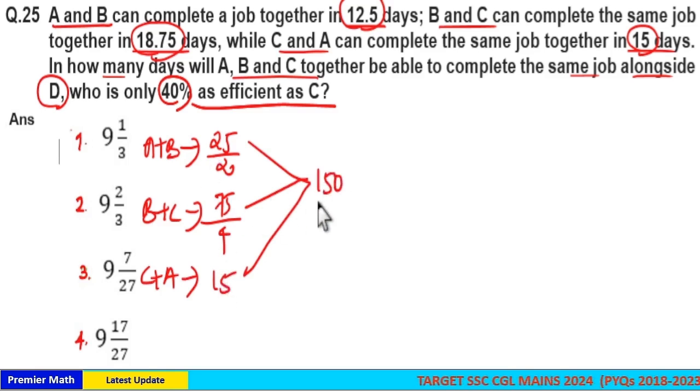All these three goes in 150. 25 by 2 goes 12 times in 150; 75 by 4 goes 8 times in 150; 15 goes 10 times in 150. Total work is 150 unit and efficiency of A+B, B+C, and C+A are 12, 8, and 10 respectively.